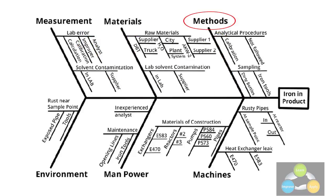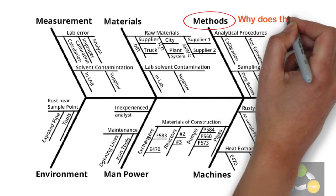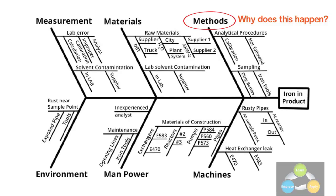Step 4: Brainstorm all the possible causes of the problem. Ask, why does this happen? As each idea is given, the facilitator writes it as a branch from the appropriate category. Causes can be written in several places if they relate to several categories.